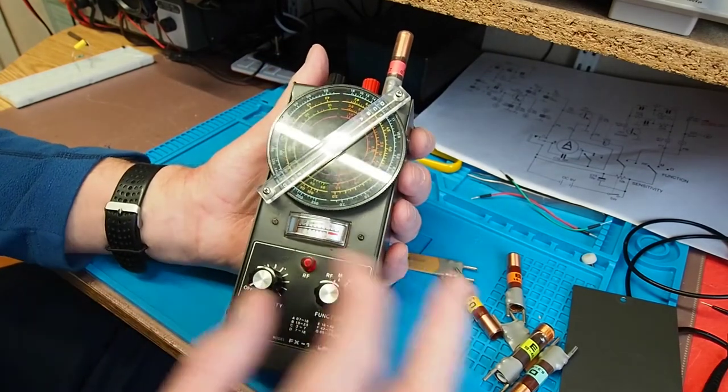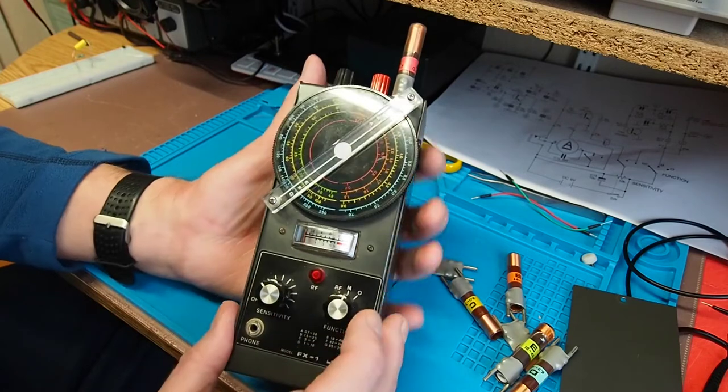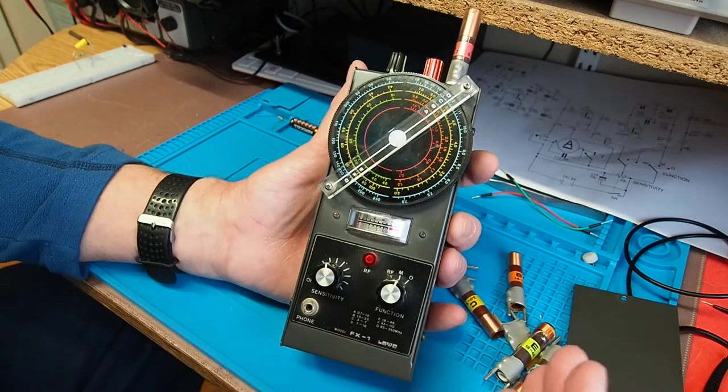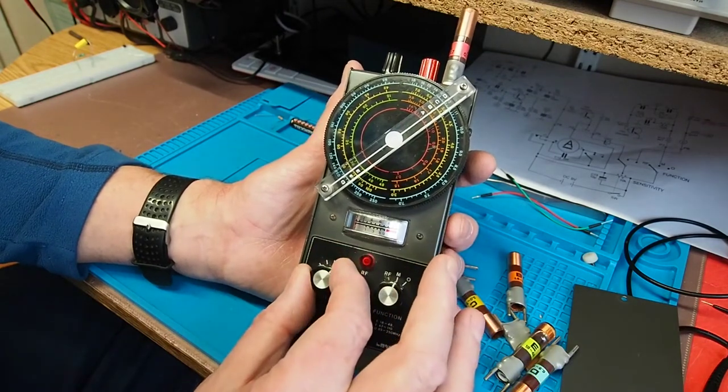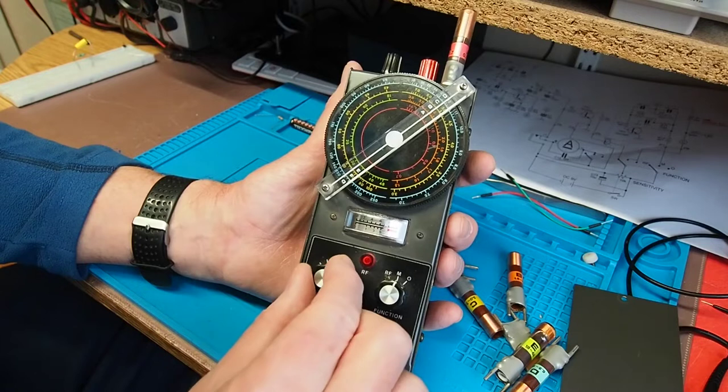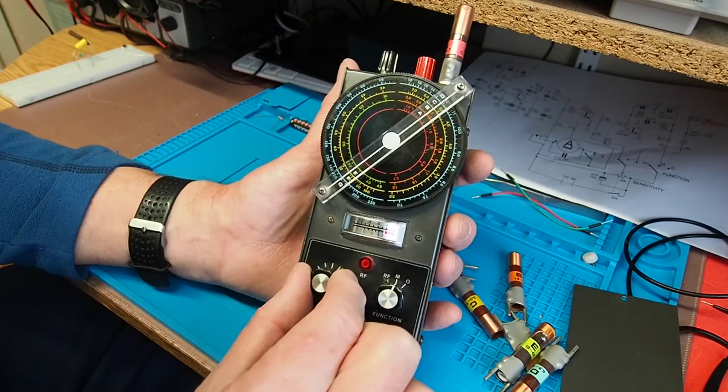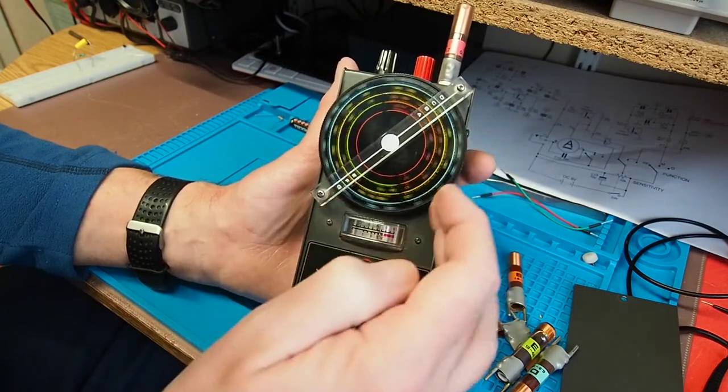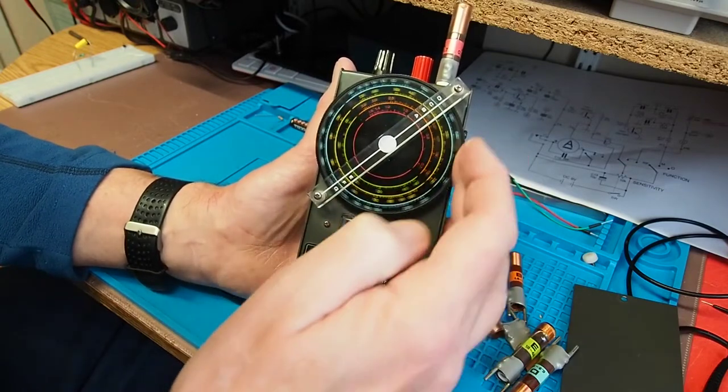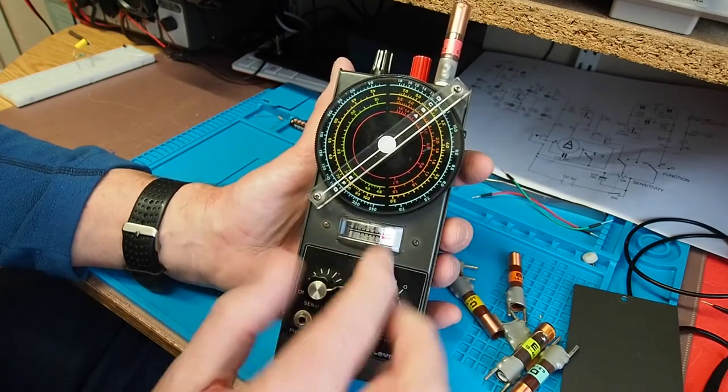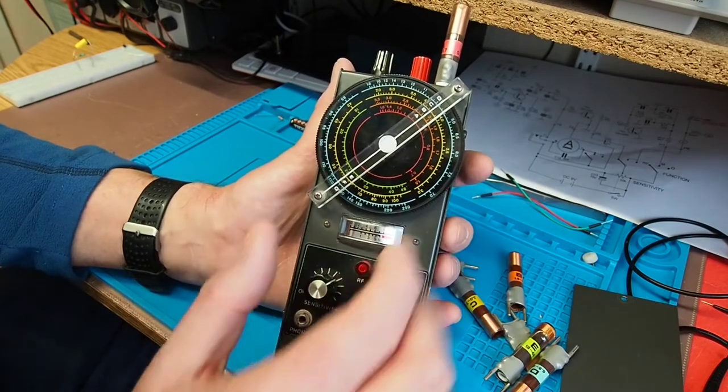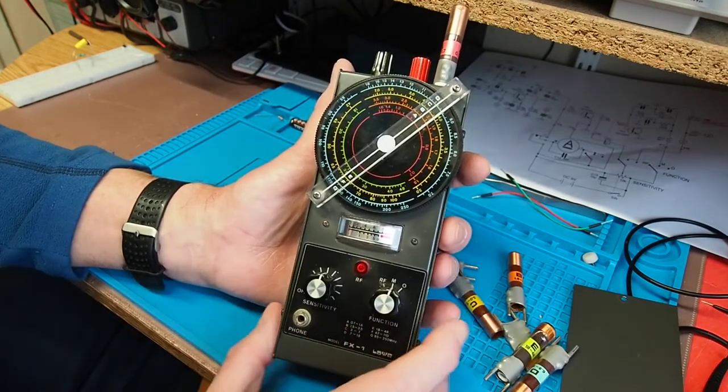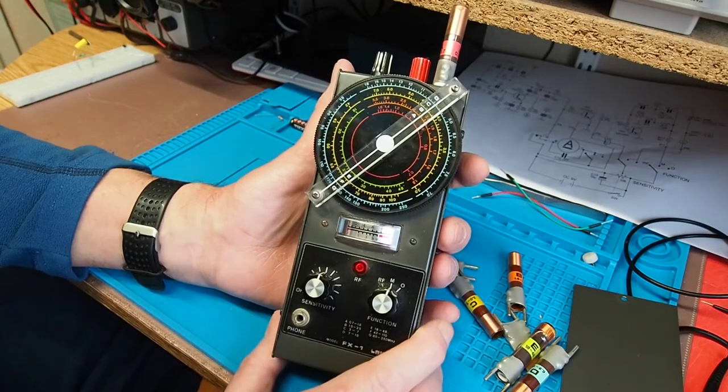That coil simply pops in there and then we can switch on. I've got it set to M at the moment. I don't have instructions for this although I have managed to find a circuit diagram. We turn it on and nothing appears to happen. In actual fact if I continue to turn up the sensitivity you see that meter will now start to move across until it goes full scale there. Depending on where you are in the band, the level of oscillation that's going on will vary a little bit and that meter shows it. We have got RF signal out there which we'll have a look at on the scope now.